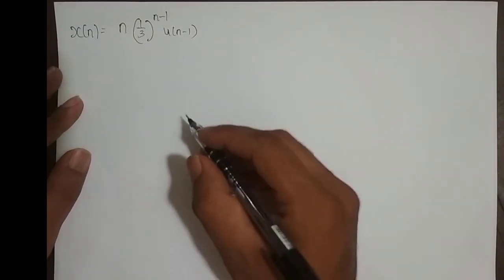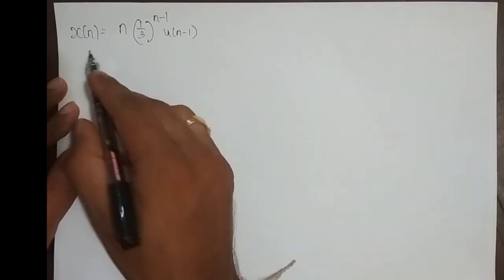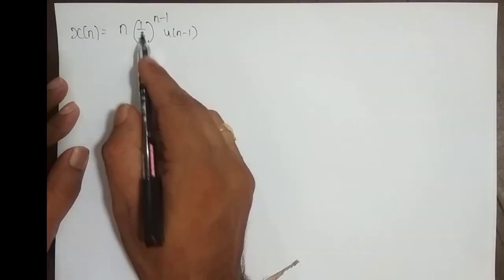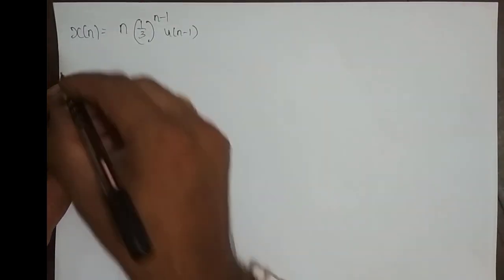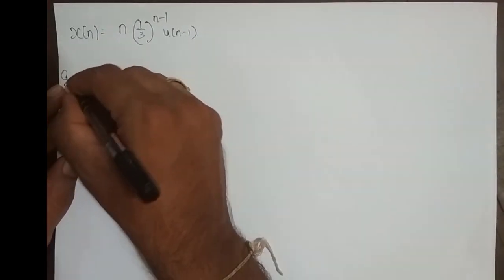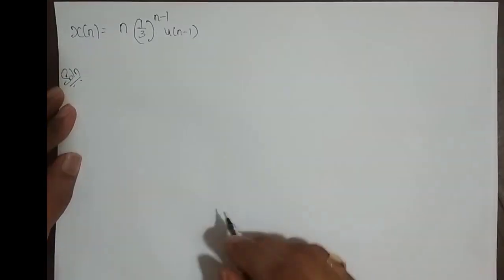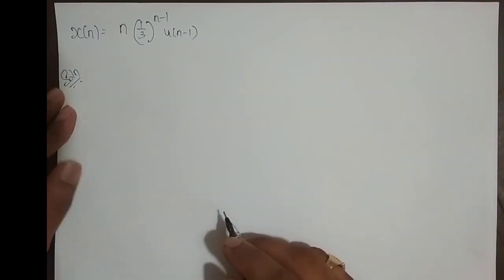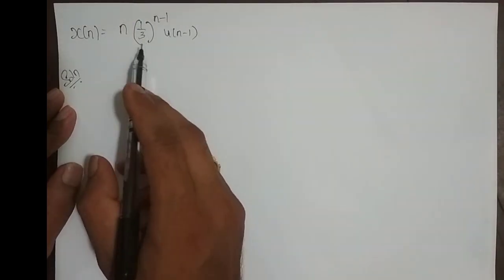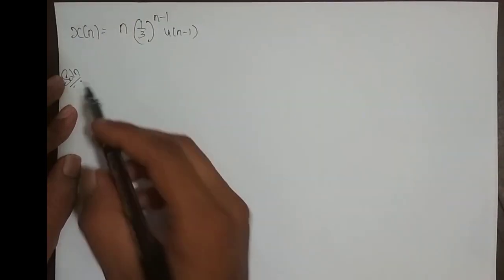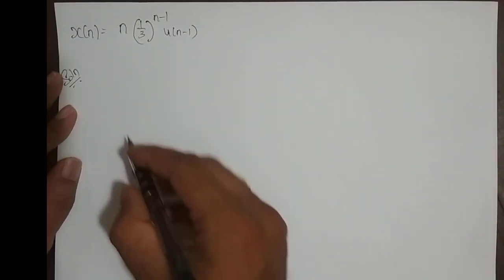Hey guys, we shall continue with the problems. This time x of n is n into 1 by 3 power n minus 1, u of n minus 1. We shall try to solve this problem. Our aim here is to find its Z-transform and ROC using appropriate properties of Z-transform.